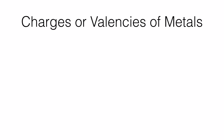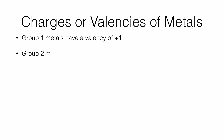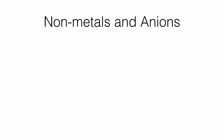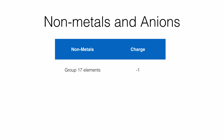To look in detail: group 1 elements in general have a valency of plus 1, group 2 metals have a valency of plus 2, group 13 elements have a valency of plus 3. Transition metals between groups 2 and 13 have a variable valency, therefore they can have more than one valency. Non-metals tend to form anions by gaining electrons. Group 17 elements have an oxidation state of minus 1, group 16 is minus 2, and group 15 has a valency of minus 3. These are the common valencies we will be using.